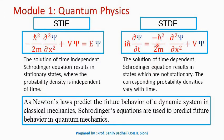And if we find the solution of time dependent Schrödinger equation, it will result in non-stationary states and the corresponding probability densities will vary with time.